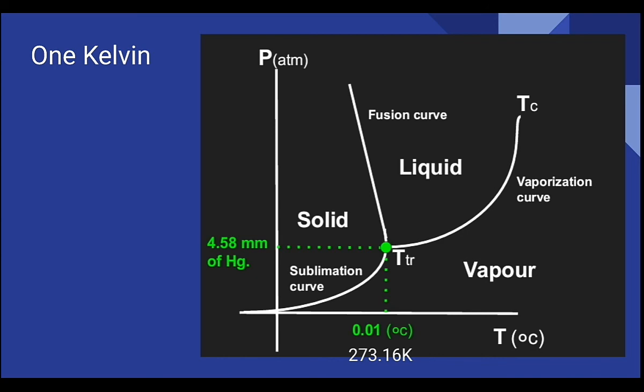That is, we can get ice, water, and vapor at the same time at temperature 0.01 degrees Celsius. Or in Kelvin scale, we know 0 degrees Celsius equals 273.15 Kelvin, then 0.01 degrees Celsius equals 273.16 Kelvin. This 273.16 Kelvin is the thermodynamic temperature of the triple point of water.